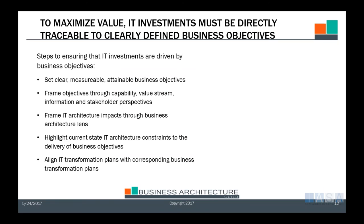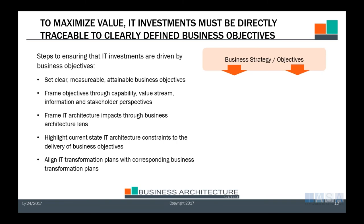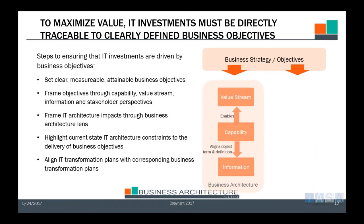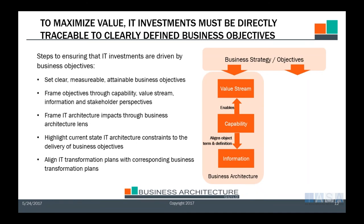Having that in hand, we want to understand how to go about this to maximize value. I should make sure my IT investments are directly traceable to clearly defined business objectives. How do I do that? One step is to set measurable, attainable business objectives. It's unfortunate and shocking, but common, that businesses don't actually have clearly defined, measurable, attainable business objectives laid out in actionable ways — something that actually could be attained, not a general mission statement like 'make my customers happy,' but clear, concise objectives on things you're trying to achieve.